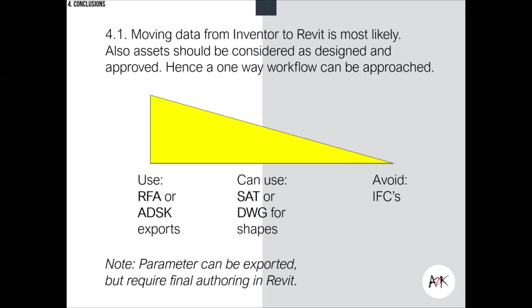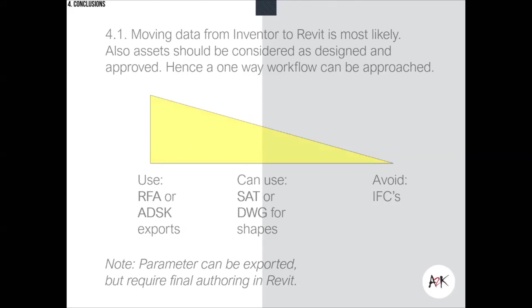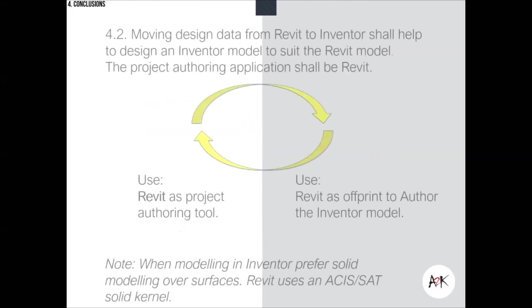Remember that parameters can be exported from Inventor, but they require final authoring in Revit with dimensions — as we saw earlier. This can be a little tricky and may ask for some rework if you need the geometry to be flexible or parametric in Revit.